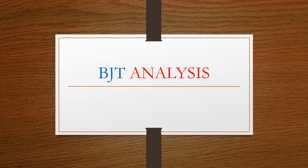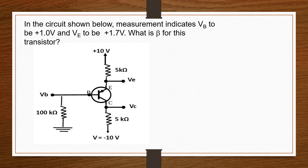Friends, we are back again with BJT analysis. In the sequence shown below, measurement indicates VBE to be 1.0 volts and VE to be 1.7 volts. What is beta for this transistor?